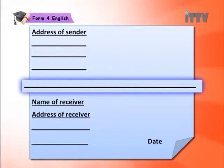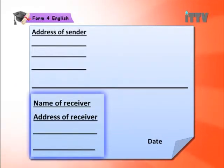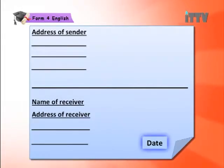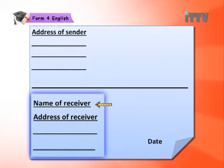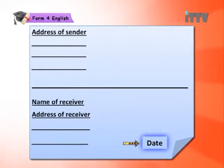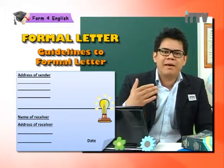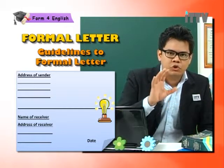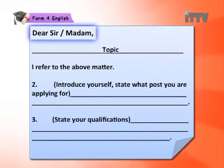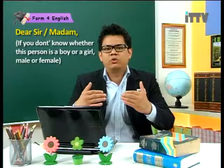Right at the top you have the address of the sender. Below that you have a long line — this line isn't there just to separate; it is part of the format. Then you have the name of the receiver and address of the receiver. Next to the receiver's address, you have the date on the right. The address of sender is at the top on the left-hand side, then a line, then name and address of receiver. At the bottom of that address on the right-hand side, your date needs to be in line. If you can write this properly and remember the format, all of this will add to your total mark.